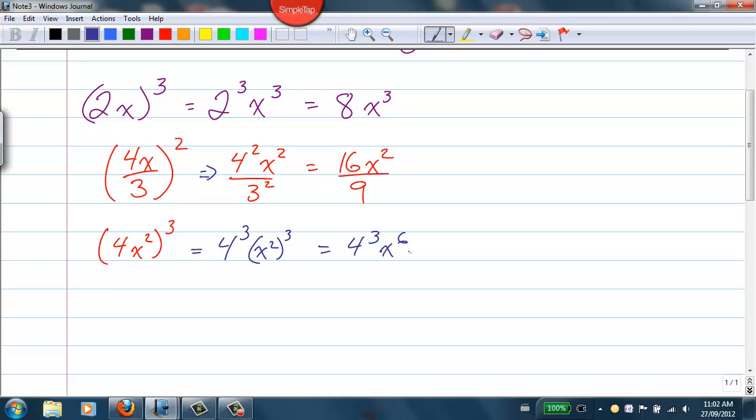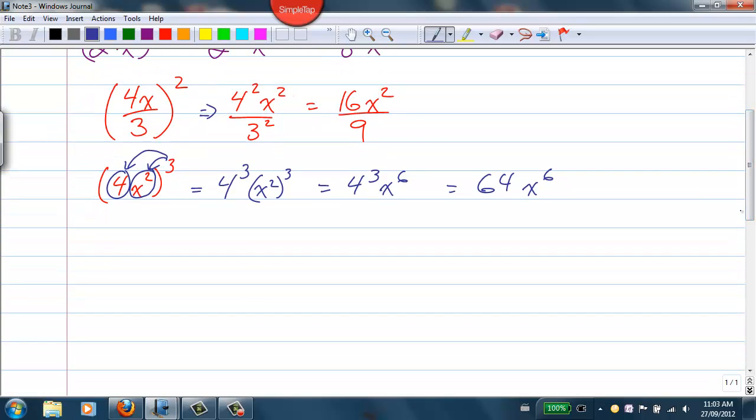The 4 cubed becomes, what's that? 64, and the x squared cubed, we multiply the exponents together and we get 64x to the 6. So note the 3 affects everything inside the brackets.